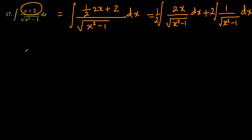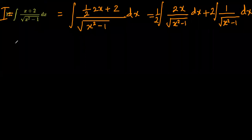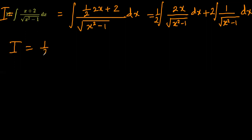If we represent the whole question as i, then i equals one half times i1 plus 2 times i2, where i1 is the first integral part and i2 is the second integral part. We will now integrate both these two parts separately.